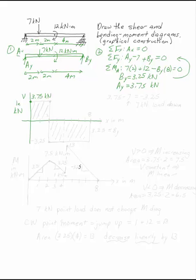Nothing happens between this 3.75 kilonewtons and two meters. So V is constant up until that point. At two meters, you have a point load down. That point load down drops your V diagram by seven.